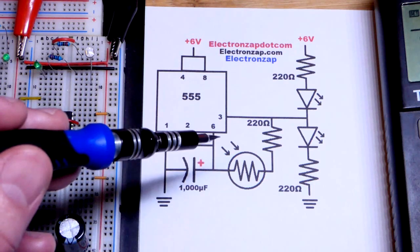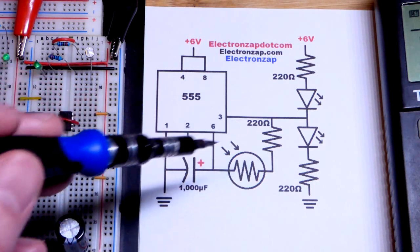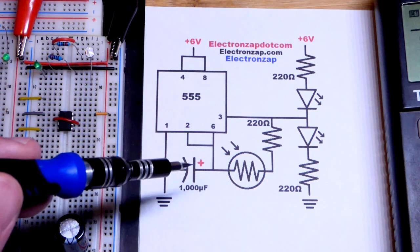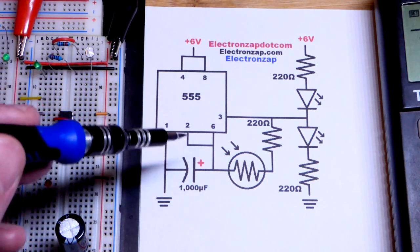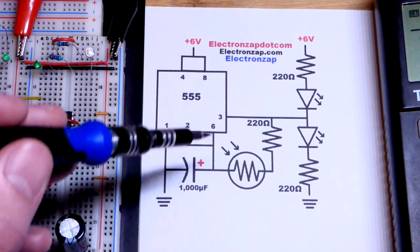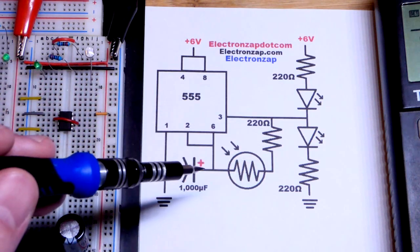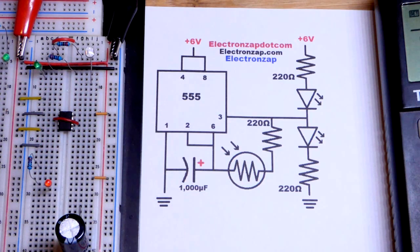So that will charge the capacitor and also discharge it. But pin 6 is waiting for two-thirds of the supply voltage, pin 2 for one-third. And it keeps changing the output and will change whether the capacitor is charging or discharging. Basic A-stable multi-vibrator stuff.